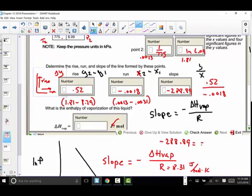that's going to be set equal to negative our target variable heat of vaporization over R the gas constant 8.31 and that's a joule per mole kelvin so I'm going to cross multiply so negative 288.89 times 8.31